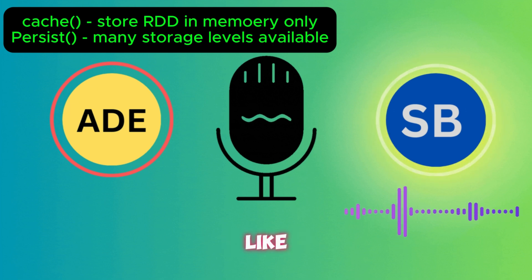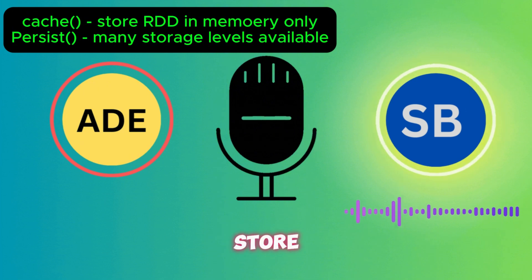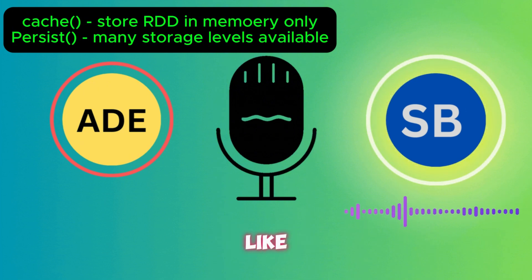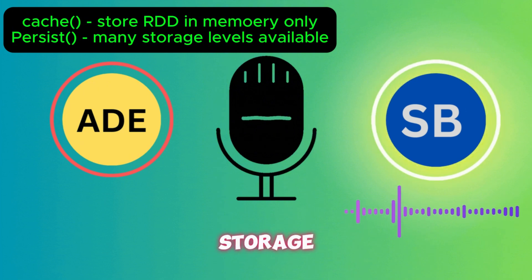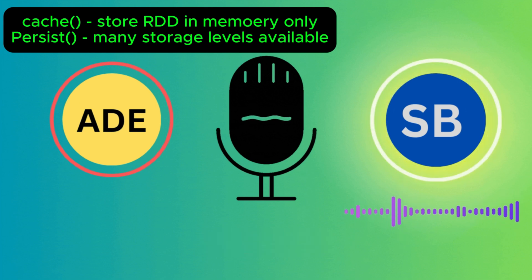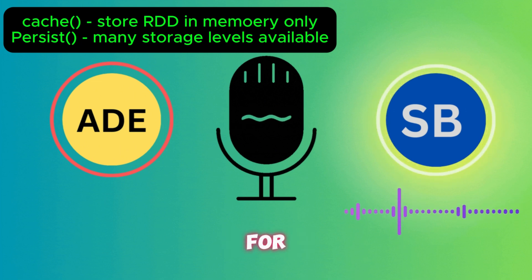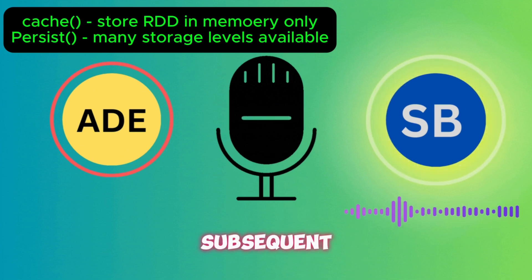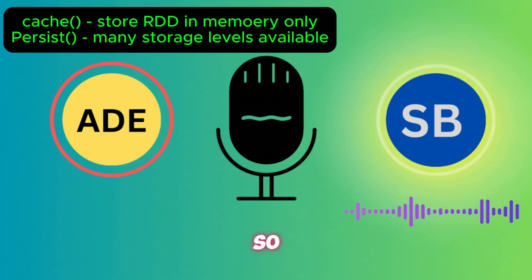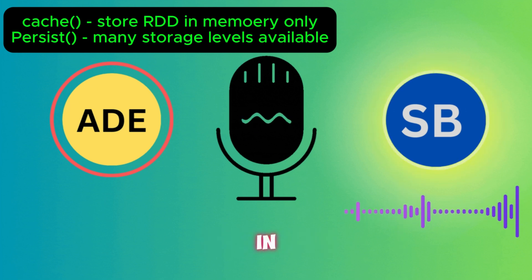The cache method is a default method to store data in memory only. The default storage level will be memory only. When you call this method, Spark will store the RDD partitions in memory across the cluster nodes, allowing for quick access during subsequent operations.